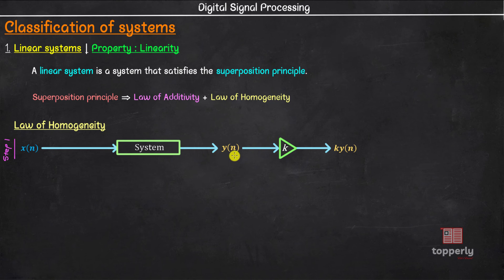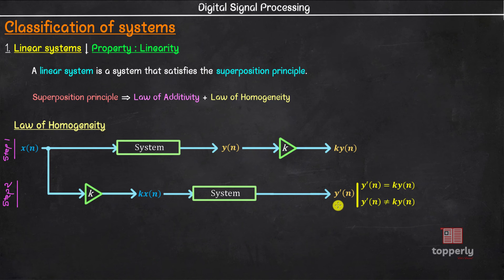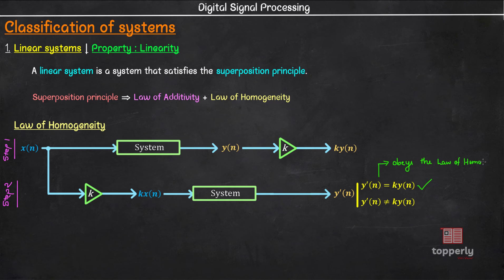In step 2, instead of multiplying the output y(n), we will multiply the input x(n) with a constant k to get k times x(n). Then this k times x(n) is fed to the same system as input, and let the output be y'(n). Just like before, there are two possibilities for y'(n): y'(n) can either be equal to k times y(n) or not equal to k times y(n). The system is said to follow the law of homogeneity only when y'(n) is equal to k times y(n). In the second case, it does not obey the homogeneity principle.